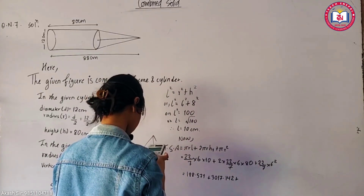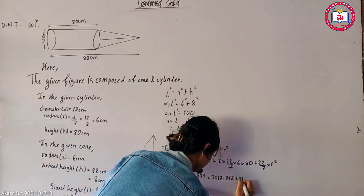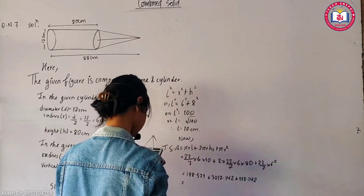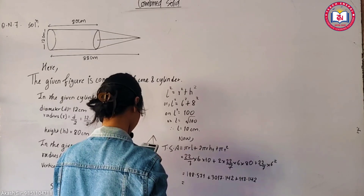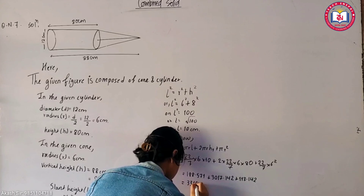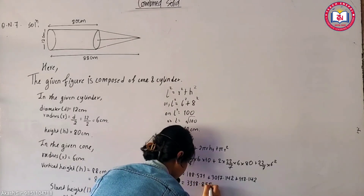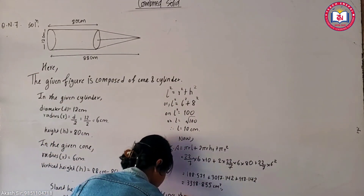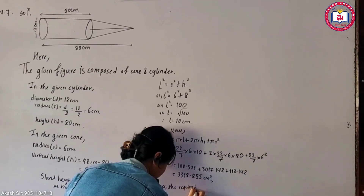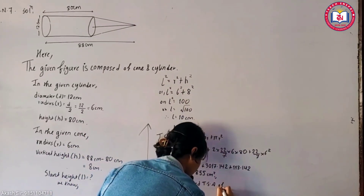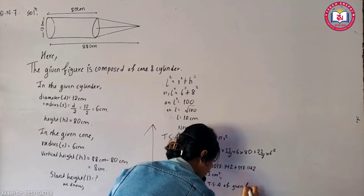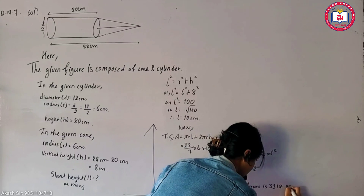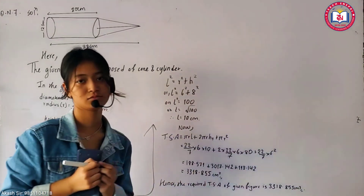This value is 17.142. Also, this value is 315.85 square centimeters. Another value is 87.142, and the combined elementary square value is 18.752. The total surface area of the given figure is 3318.855 square centimeters.